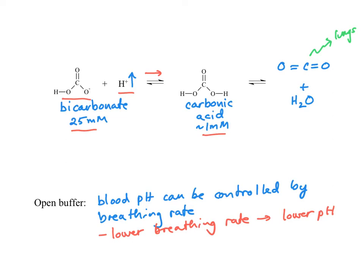So if your pH is too high, your breathing control system in your brain will slow your breathing down and allow the pH to be brought back down a little bit.